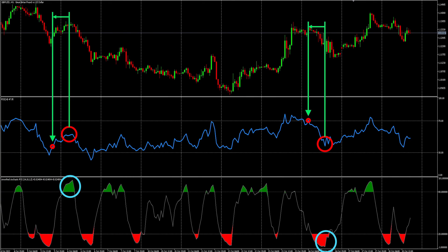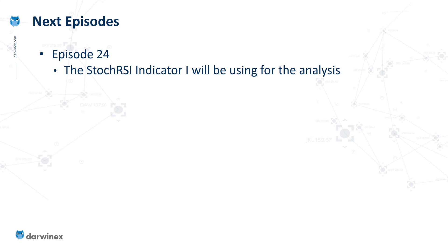Hopefully that's given a better understanding of how Stochastic RSI works and illustrated how it might overcome some of the issues we experience with the standard RSI. As part of my initial analysis, I looked at numerous different Stochastic RSI indicators for the MetaTrader platform and came to a decision about the one I'll be using, which I'll explain in the next episode. I'll share that indicator and provide details of where you can download it, so if you want to follow the analysis along with me, you'll be able to look at your own charts using exactly the same indicator.